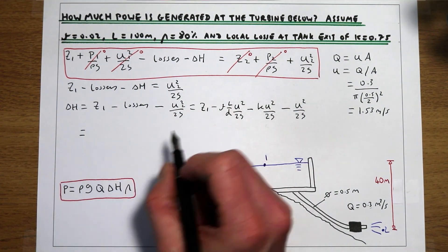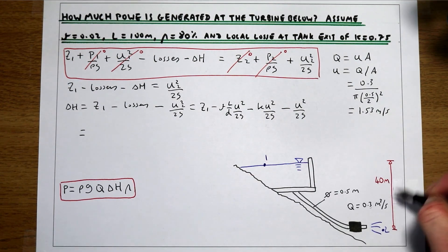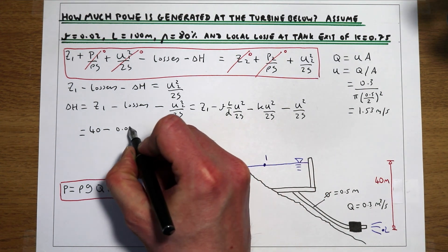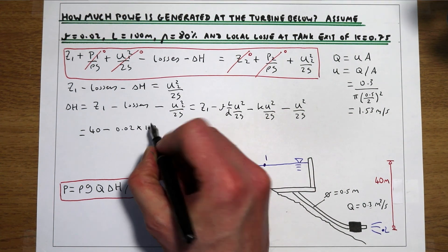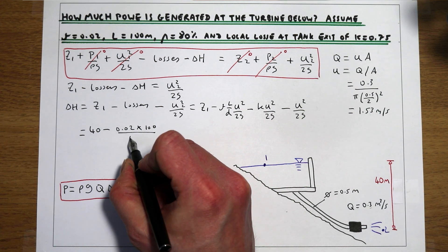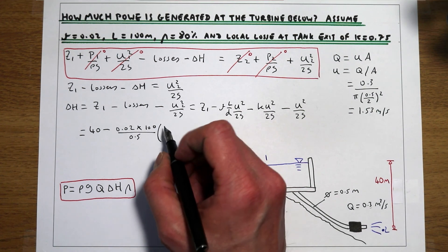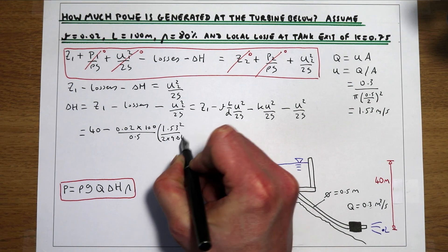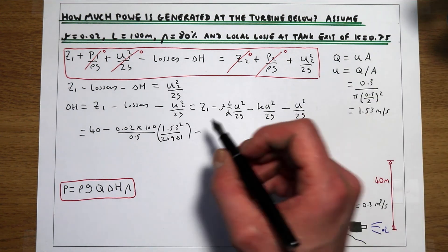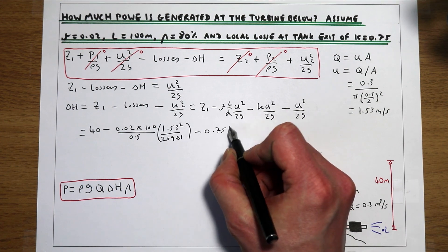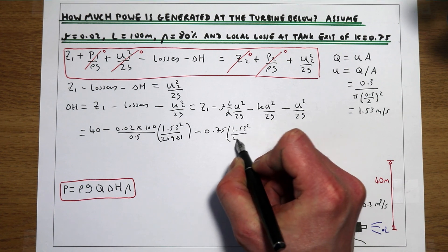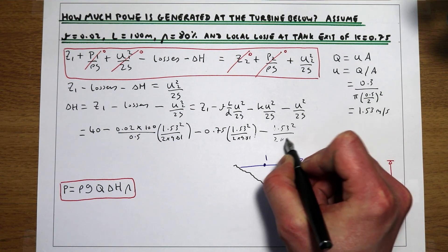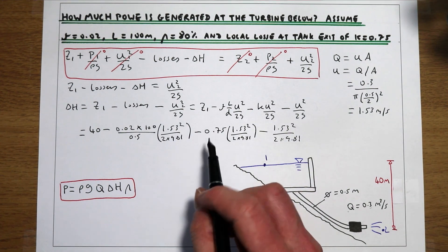Plugging the numbers in: Z1 is 40 metres; the friction factor is 0.02, the pipe length is 100 metres, the pipe diameter is 0.5 metres, times U squared over 2G (1.53 metres per second squared over 2G); minus the local loss with coefficient 0.75, again times U squared over 2G; minus the final U squared over 2G term.